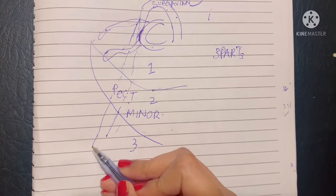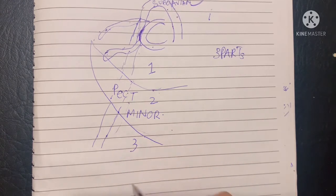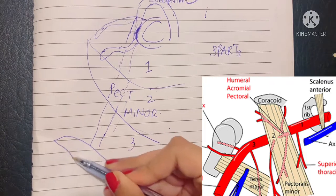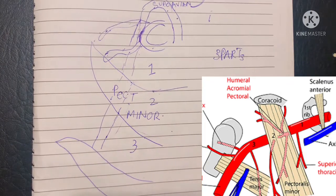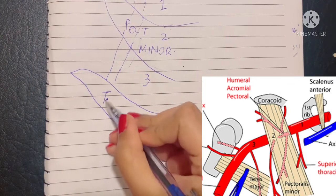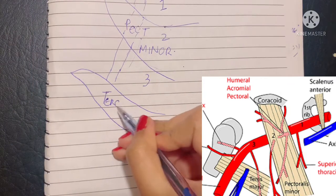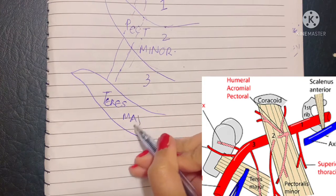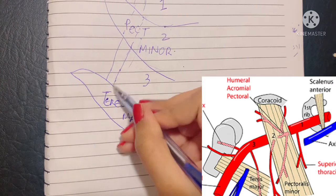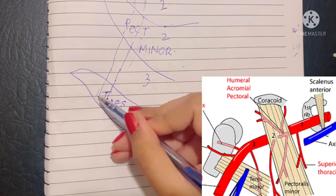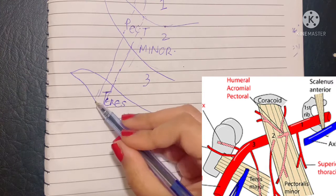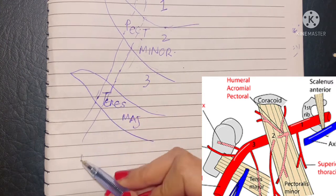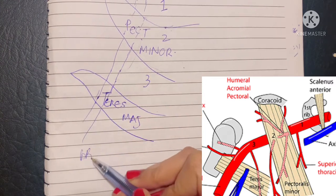Finally, the axillary artery loses its name again when it encounters the teres major muscle. At the lower border of the teres major, the axillary artery changes its name to the brachial artery.